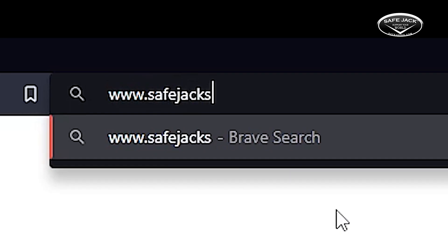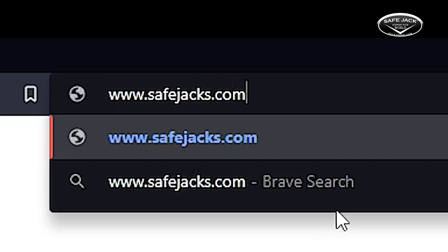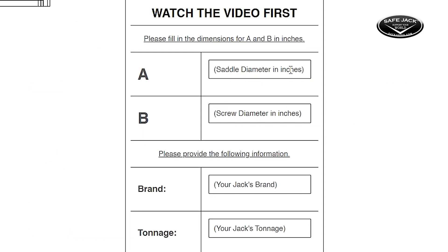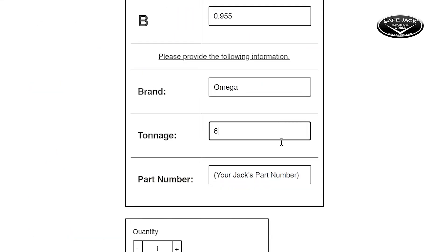Custom ESCs can be ordered on our website safejacks.com by searching for 37M-CustomESC. Just enter your jack's measurements from earlier, as well as the brand, tonnage, and part number.